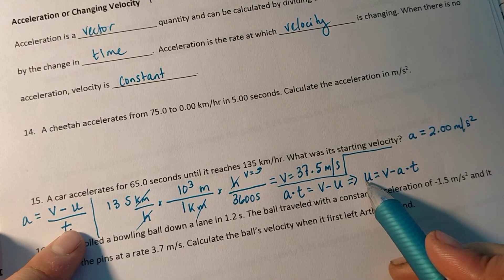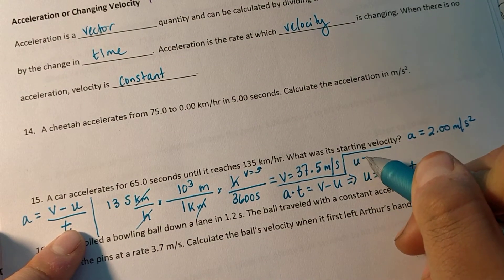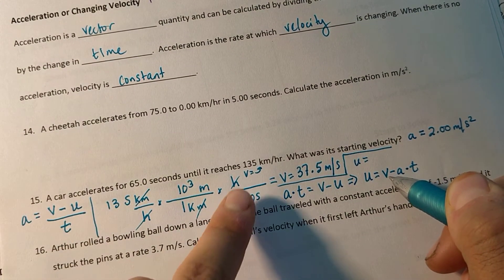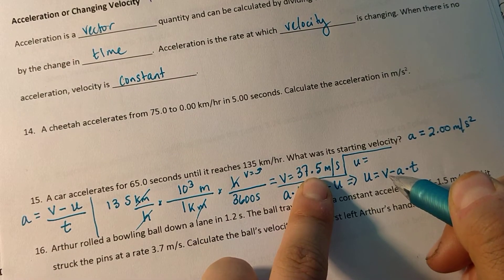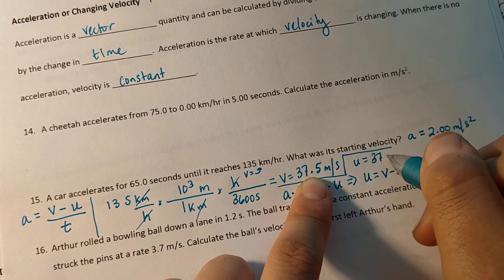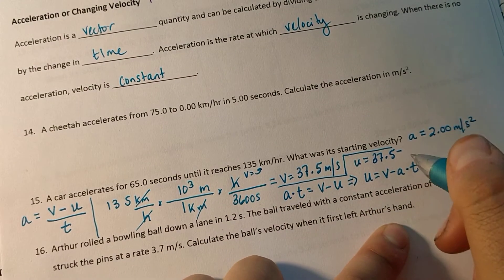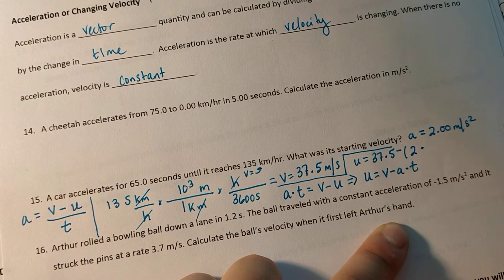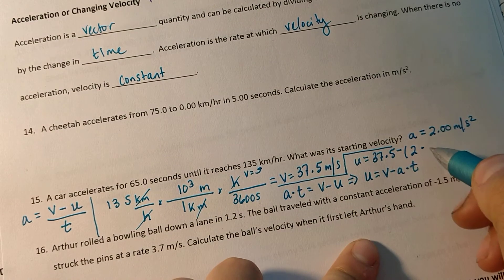So u equals v minus acceleration times time. We're looking for u. So we plug in everything else. My final velocity is this 37.5 minus the acceleration, 2 meters per second squared times 65 seconds.